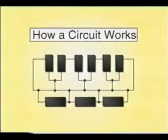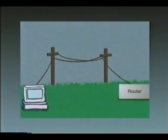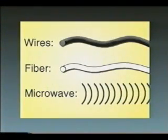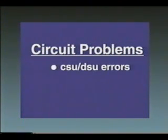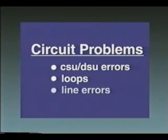In order to understand a problem, it is important to know how circuits work in the first place. A circuit runs between a site and a provider's router, and must be provided by the phone company, which runs a continuous path between the two endpoints. The connection may run over many different wires, fiber, or microwave, and will have many different types of specialized hardware installed to make the circuit work. The types of problems you will likely see on a circuit include Channel Service Unit, Data Service Unit errors, loops, and line errors.